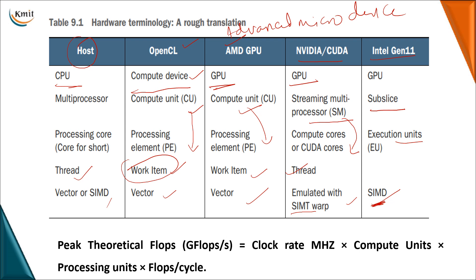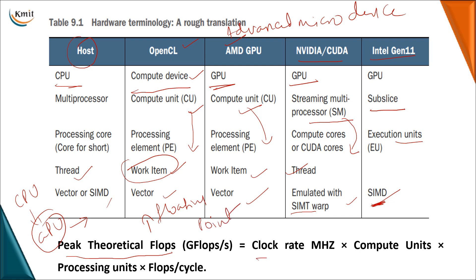Having seen the CPU and the internal organization of the GPU, we can now calculate the speed-up of a GPU using peak theoretical FLOPS — Floating Point Operations Per Second. The formula is: clock rate multiplied by the number of compute units in your GPU, multiplied by the number of processing units, multiplied by the FLOPS per cycle. This gives you the total theoretical FLOPS, which indicates the speed-up of the GPU.